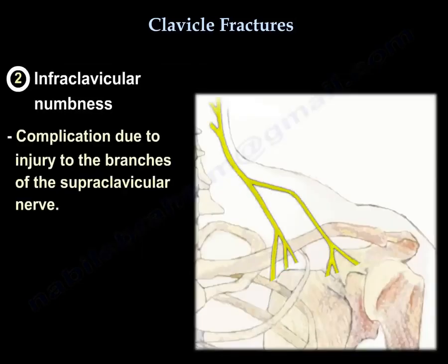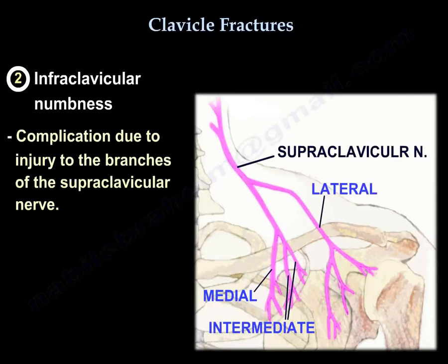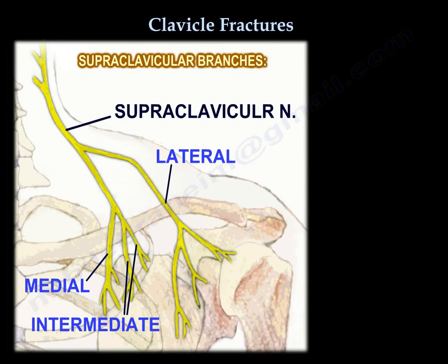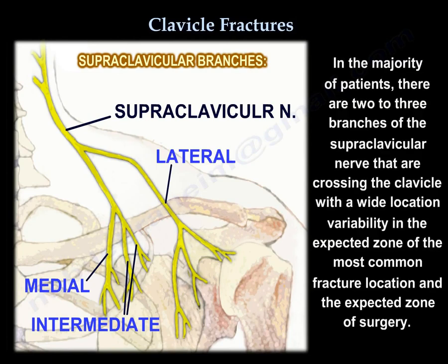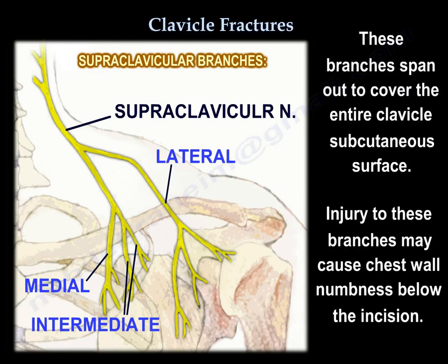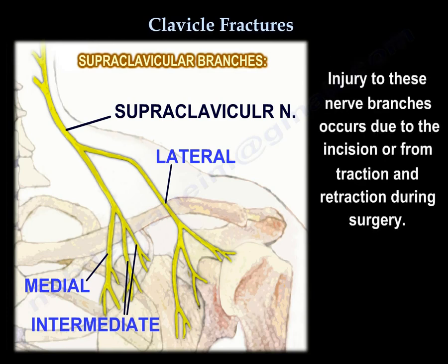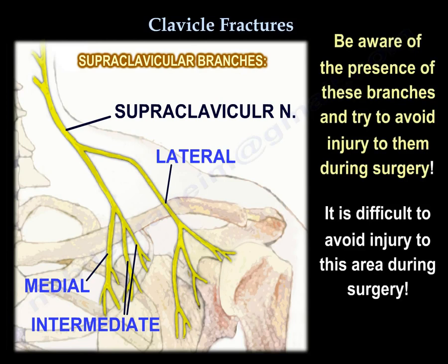Another complication is infraclavicular numbness, which occurs due to injury of the branches of the supraclavicular nerve. In the majority of patients, there are two or three branches of the supraclavicular nerve crossing the clavicle with wide location variability in the expected zone of the most common fracture location and in the expected zone of surgery. These branches span out to cover the entire clavicle subcutaneous surface. Injury to these branches may cause chest wall numbness below the incision, occurring due to the incision or from traction and retraction during surgery. Be aware of these branches and try to avoid injuring them.